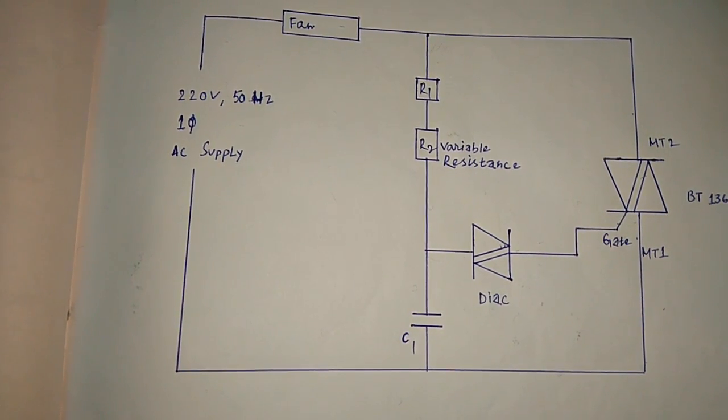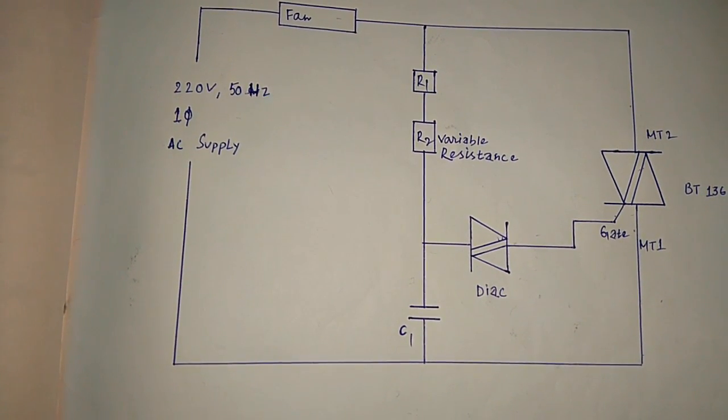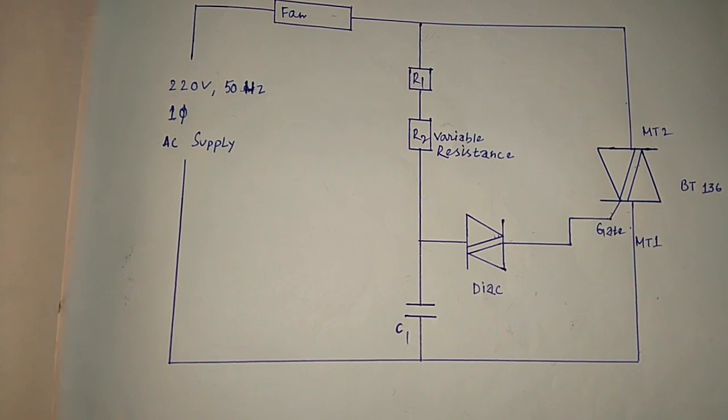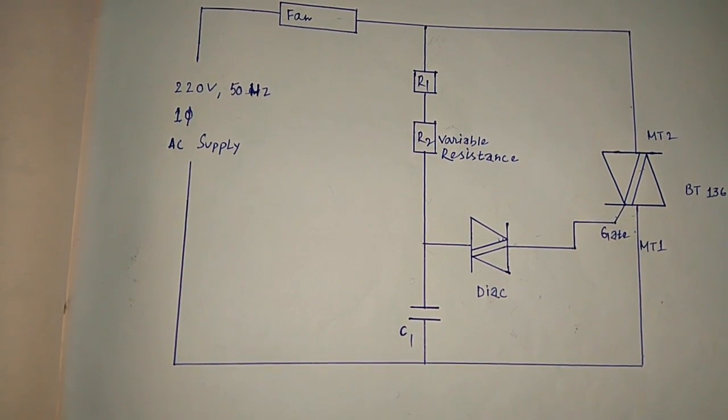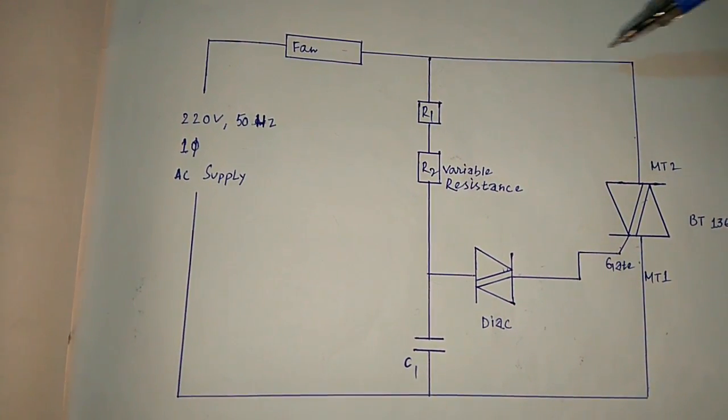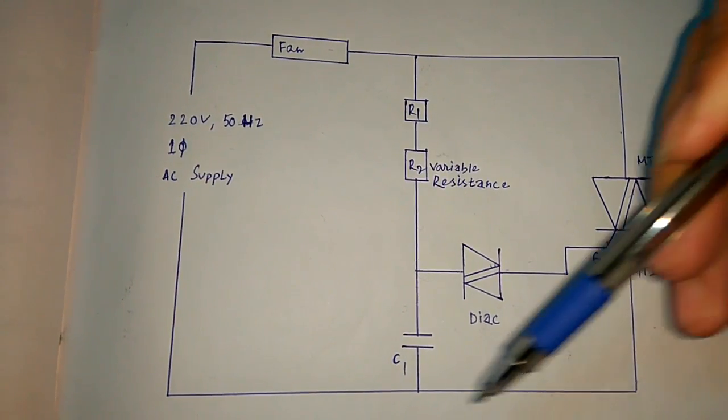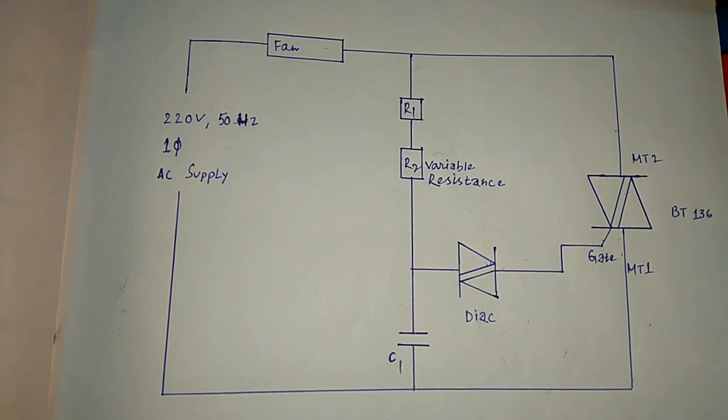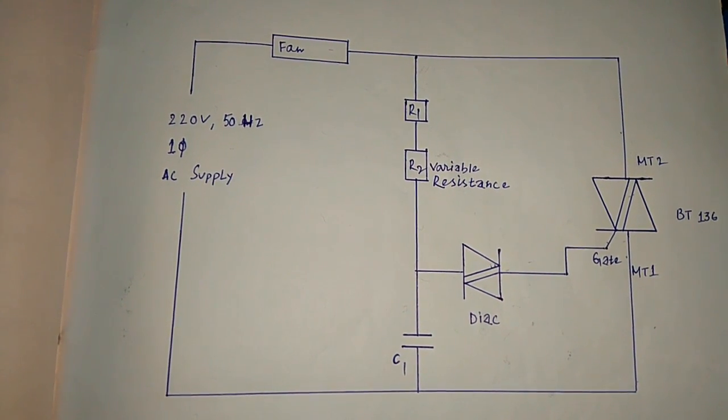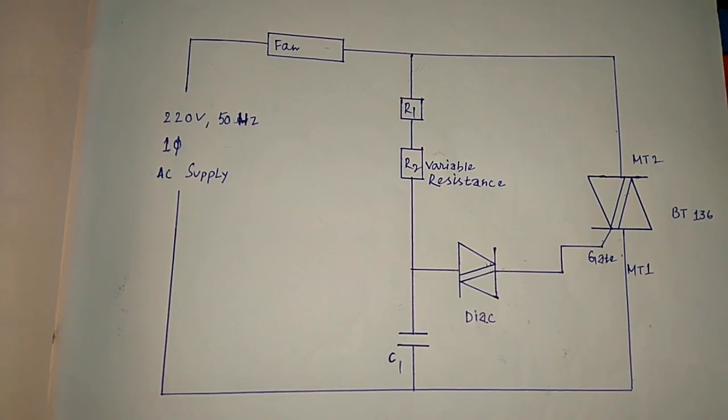Therefore TRIAC starts conducting, and hence the current starts flowing into the fan through this closed path, to this MT2 terminal, this MT1 terminal, and this supply to the fan. This closed path is being followed to run the fan.